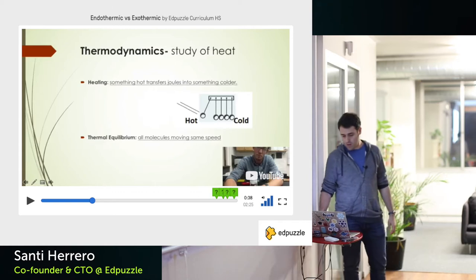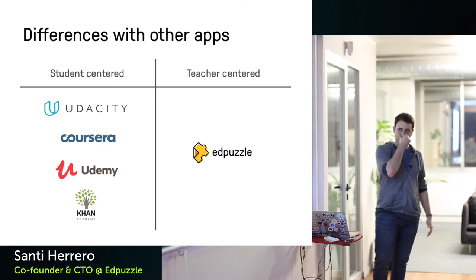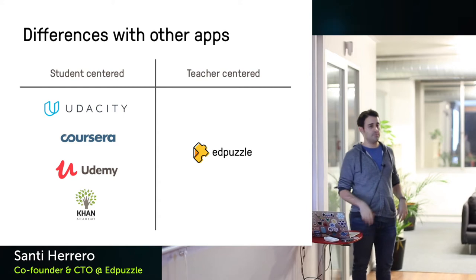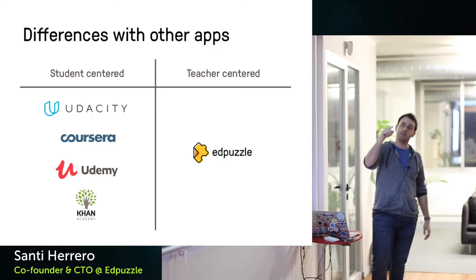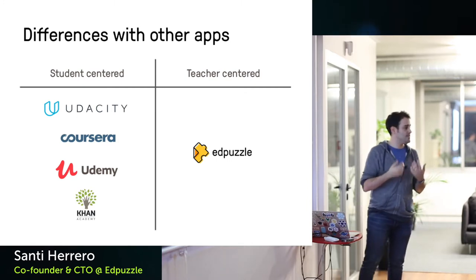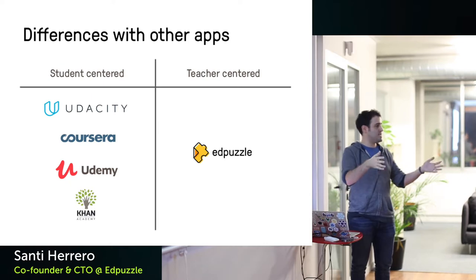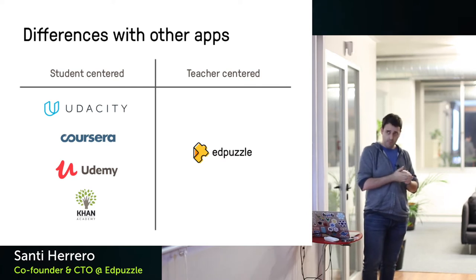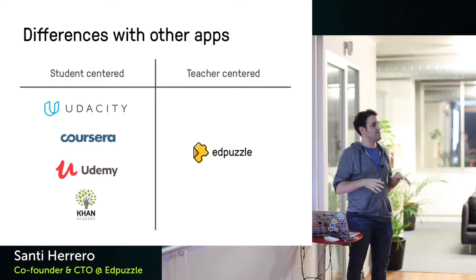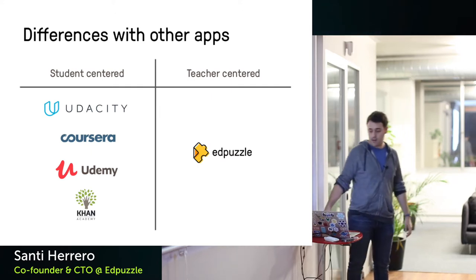There are many education apps based on video, but I want to differentiate what we're doing. You probably know platforms like Udacity, Coursera, or Khan Academy — these are student-centered platforms where individuals can learn by themselves. We follow a different path: we believe that to reach the 23 to 30 students in every classroom, you have to help the teacher. Teachers are undervalued and need technology to help them, not replace them.